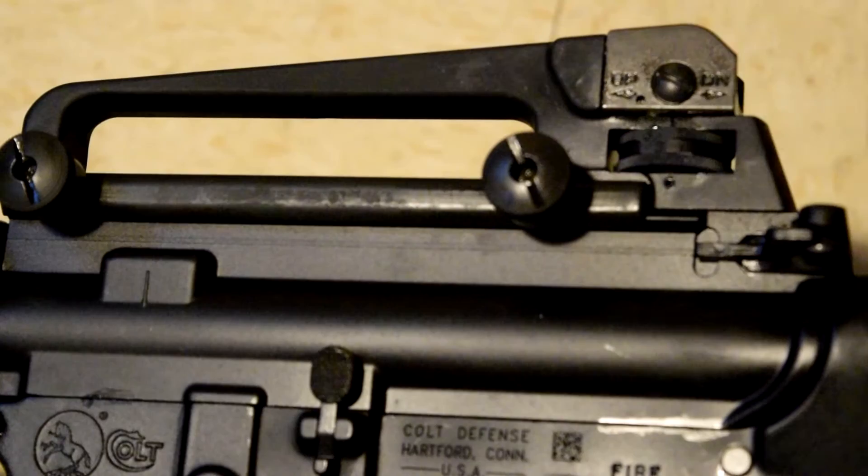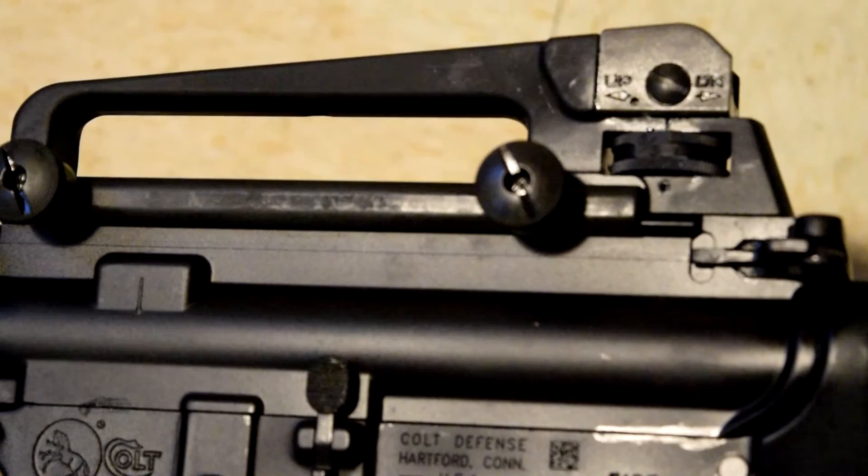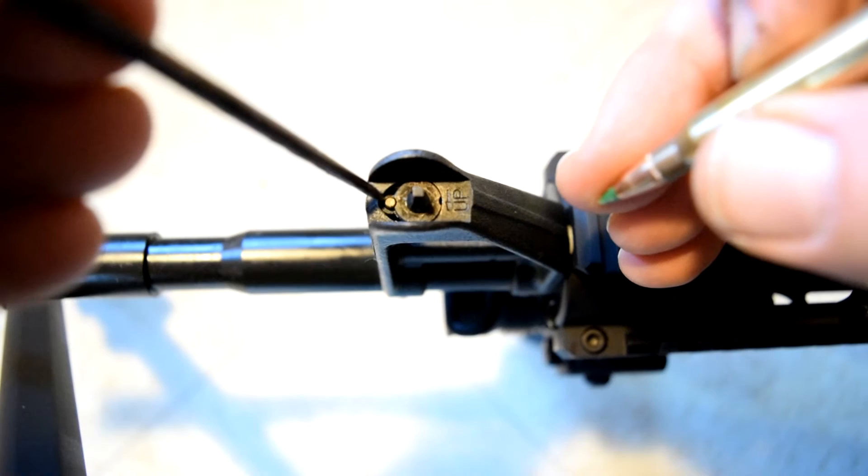We also need to do this for the front sight too. You want to get it on the mechanical zero then you will be all ready for the target. You have to push the detent down with a pick or the tip of a bullet or something like that.